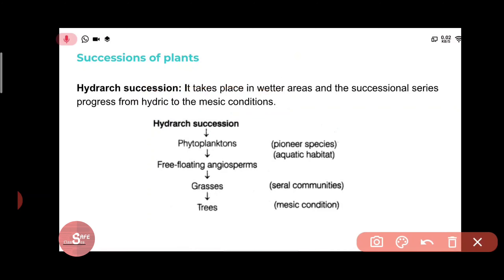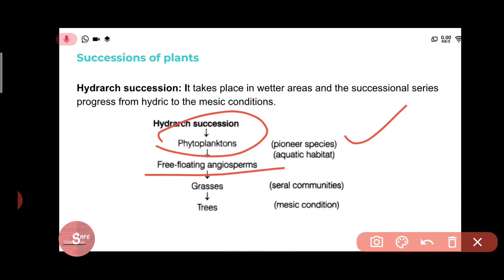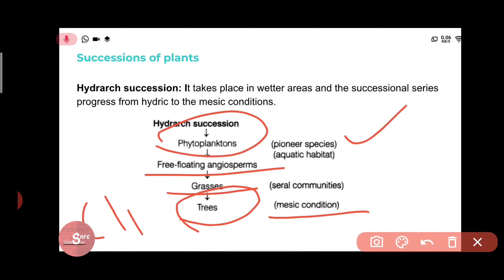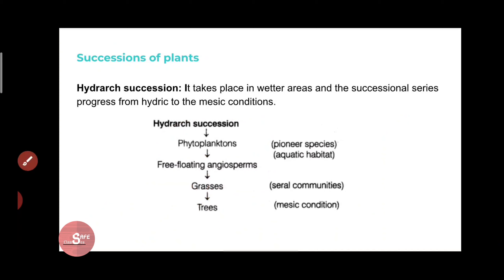In hydrarch succession, the pioneer community is phytoplankton — the microscopic plants in a pond ecosystem. Then come the free-floating angiosperms, then rooted submerged plants, then grasses, and at the end the climax community is formed by trees under mesic conditions.